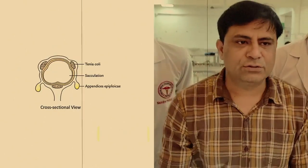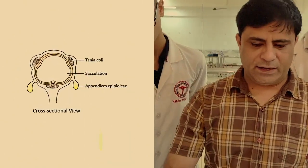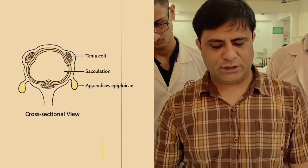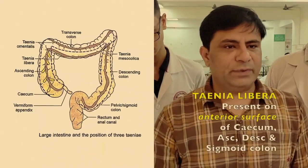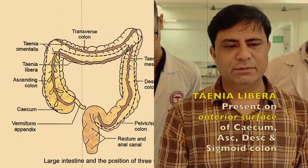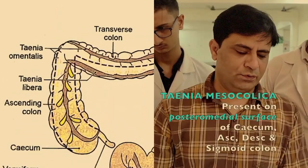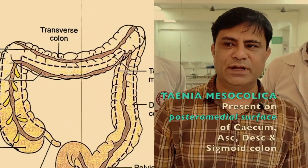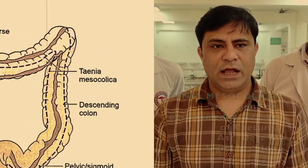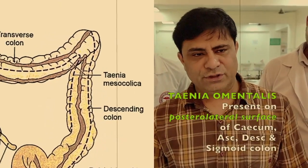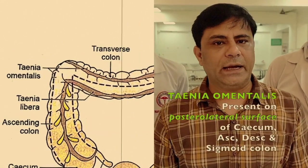Tinea. The longitudinal muscle fibers get aggregated at three different portions of the large intestine. Tinea Libera is the free one, which is opposite to the mesentery. The one towards the mesentery border is Tinea Mesocolica, and the other portion away from the mesentery is called Tinea Omentalis.